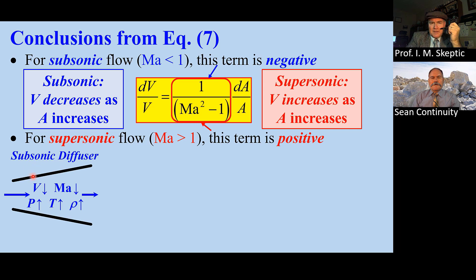For a subsonic diffuser, the duct expands and speed and Mach number go down. The other variables go up. A subsonic nozzle is the exact opposite.